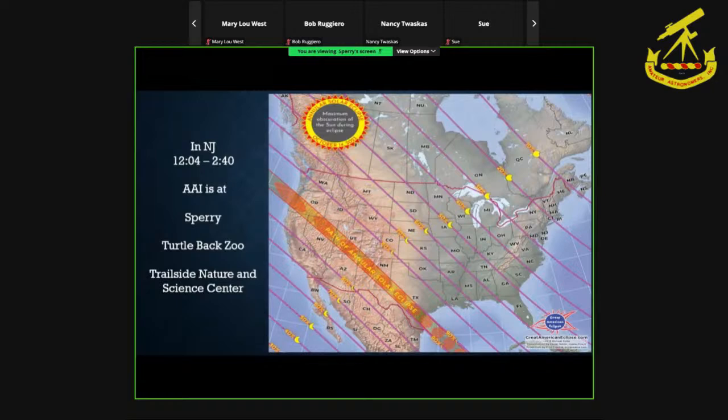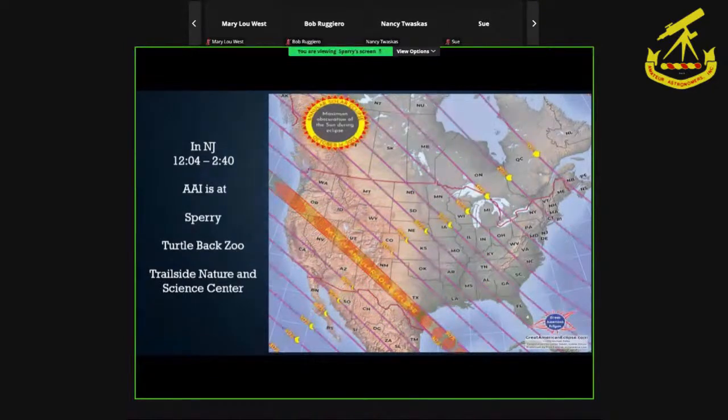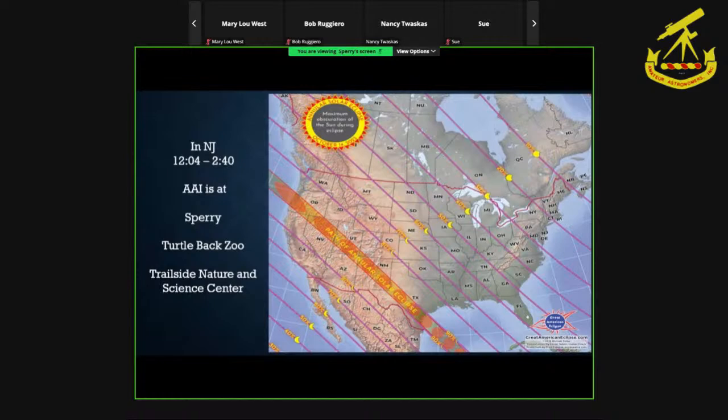It's spreading across the country, and this is a good view of who can see what. Obviously, if you're out in Oregon, Nevada, Utah, New Mexico, you are going to see 90%. Over here, we're somewhere between 30 and 20%, so I'm saying 25% of the sun covered. But again, you still do need solar glasses. We are going to be at Sperry, Turtleback Zoo, and Trailside Nature and Science Center.